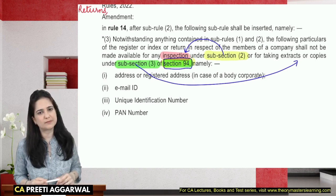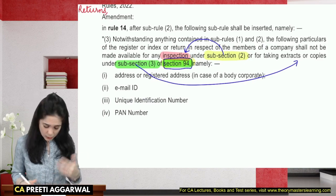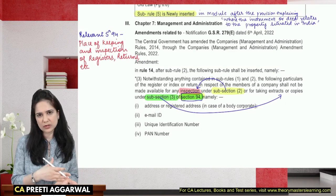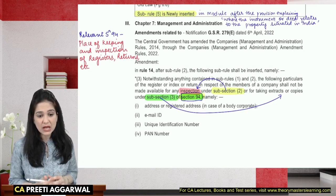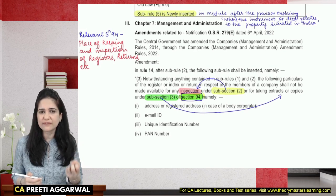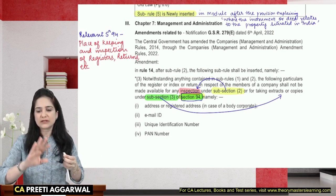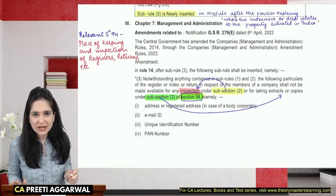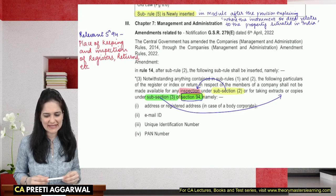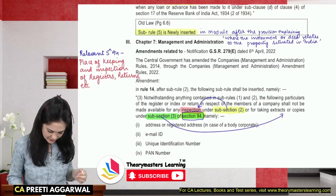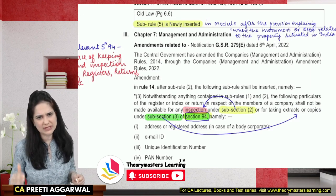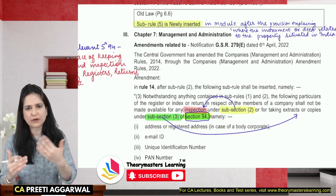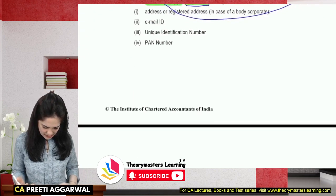What kind of question can be asked on this amendment? They may say that XYZ person, who is a member or debenture holder, wishes to inspect the register of members and has called for information relating to the email ID and PAN number of three members. The company has disallowed this information. Is there a violation? You would say no, there is no violation. You can quote the relevant amendment made in Rule 14, mention the provisions, and conclude that there is no violation because the Companies Act now allows the company to refrain from sharing this information.